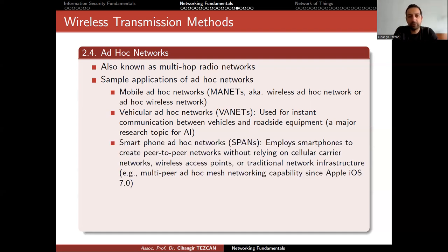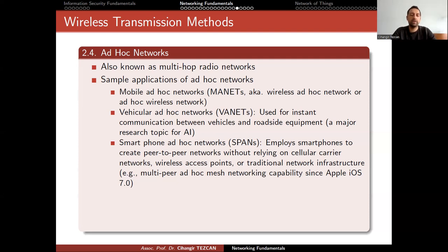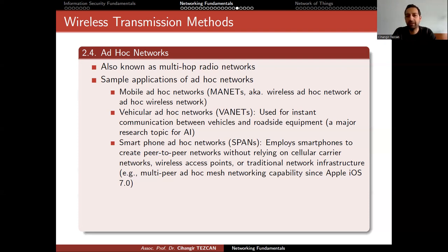Smartphone ad hoc networks employ smartphones to create peer-to-peer networks without relying on cellular networks, wireless access points, or traditional network infrastructure. For example, Apple added multi-peer ad hoc mesh networking capabilities since iOS 7.0. During the Kahramanmaraş earthquake — which covered 11 cities, an area larger than most European countries — people at the site could have created such a network with their mobile phones to communicate with each other. Without infrastructure, you cannot communicate even with someone one kilometer away, but with a smartphone ad hoc network, rescue personnel could communicate with each other and with people trapped inside collapsed buildings.